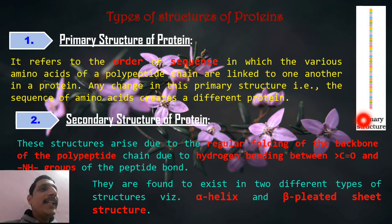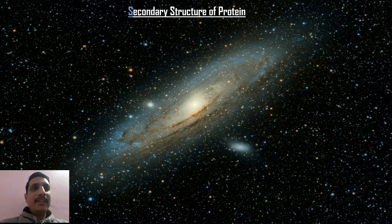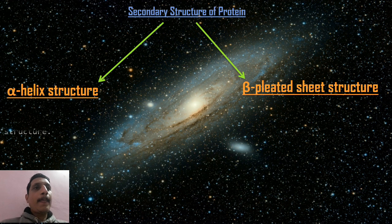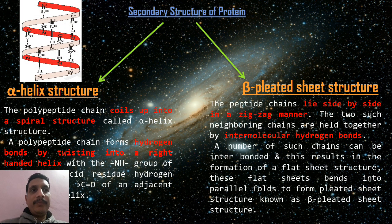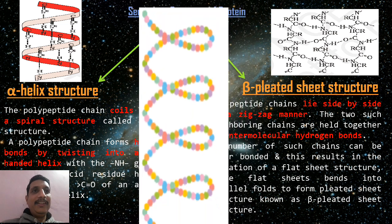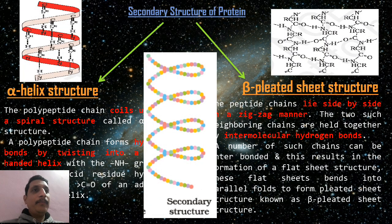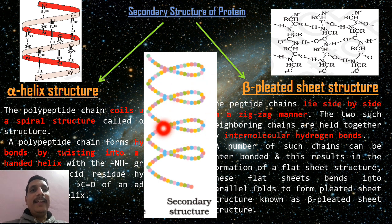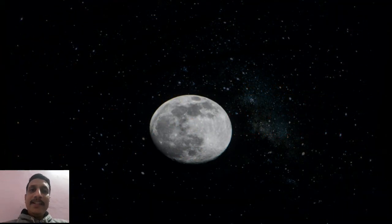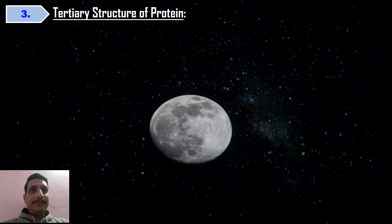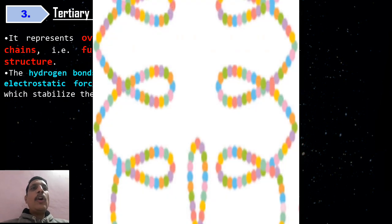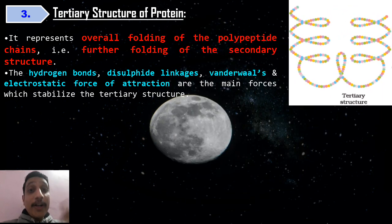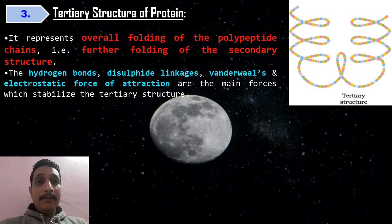Looking at the diagram: this is the primary structure. Then the secondary structure shows the coiling — in the form of alpha helix or in the form of beta pleated sheet structure.